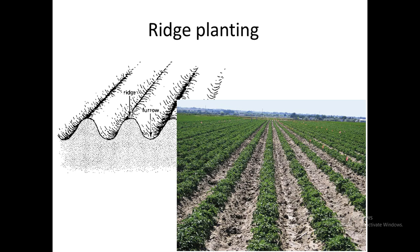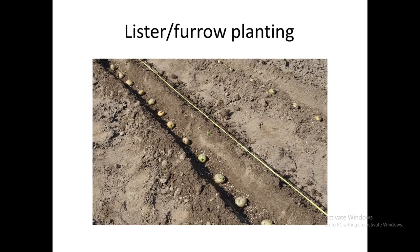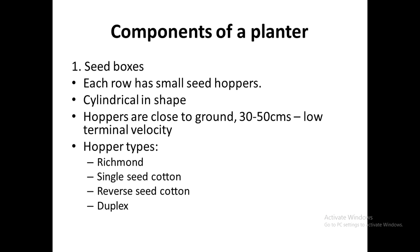In ridge planting or furrow planting, we plant crops along the ridge or along the furrow. In ridge planting, plants are grown along the ridges. In furrow planting, seeds or plants are placed in the furrows — for example, potato seeds placed in the furrows.